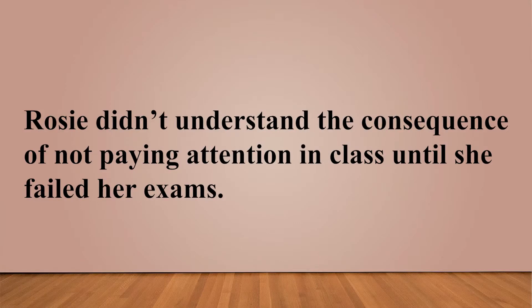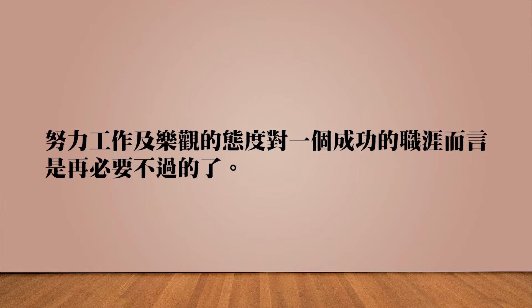第二题的另一种翻译是：Rosie didn't understand the consequence of not paying attention in class until she failed her exams. 特别注意 not until 的用法：until 指「这个时间点之前的事情」，所以要表达「到这个时间点之后才怎样」，前面必须有 not，即 did not do something until...这是非常重要的句型。